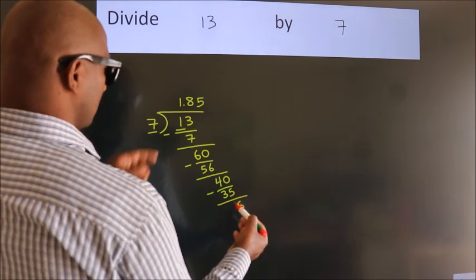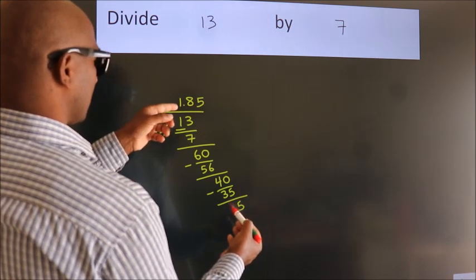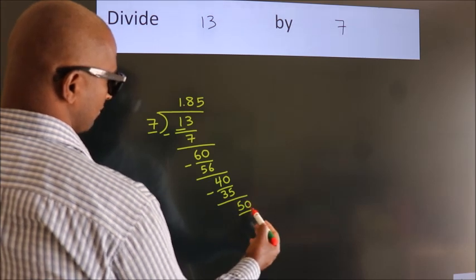After this, we already have the decimal. So directly take 0. So 50.